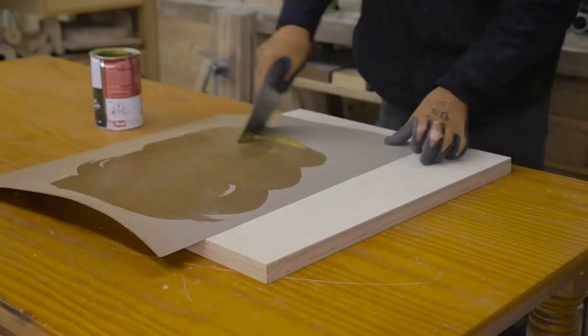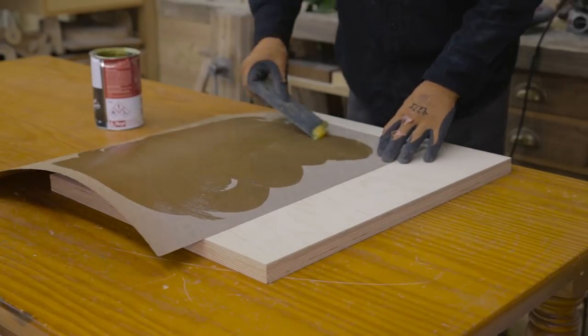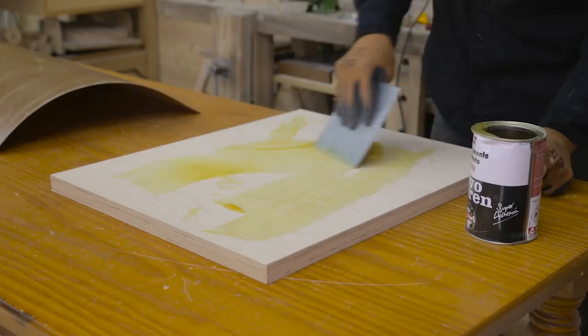Once the glue is dry, I'll glue this formica sheet on the top, making it tougher. For that, I'll use contact glue.